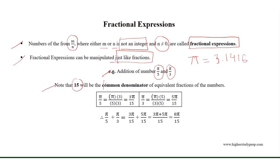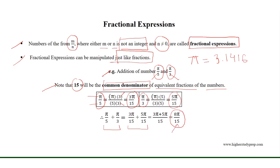Note that 15 will be the common denominator of the equivalent fractions, considering the different denominators 5 and 3. So, the equivalent fraction of pi over 5 is 3 pi over 15, obtained by multiplying both numerator and denominator of pi over 5 by 3. Similarly, the equivalent fraction of pi over 3 is 5 pi over 15. Therefore, the addition equals 8 pi over 15, by keeping the denominator 15 and adding the numerators 3 pi and 5 pi.